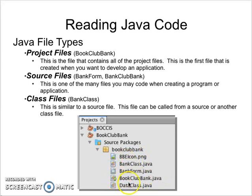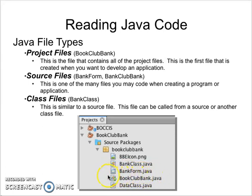Here you have another source file, which is the main source file. How do we know that? We have indicators. If you see this little arrow by the document, this signifies that this particular source file has the actual main method contained in it. This is the first class file, or Java file, that is run when this application is executed. So when we run this project, this file is responsible for calling all the other files associated with this project — not in any specific order, but in the order that they need to be called. Your Java project will always have a file with the main method, and that will be your main source file.